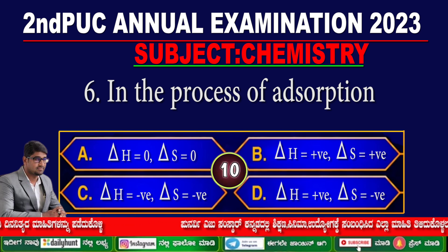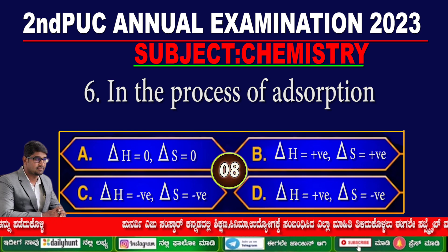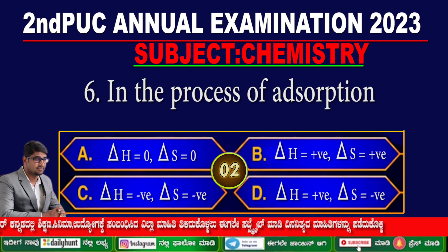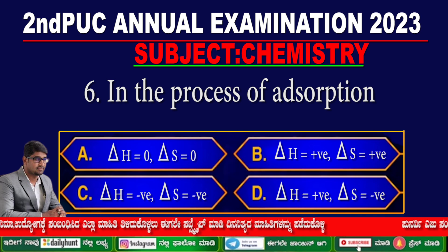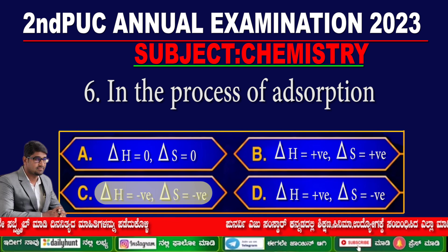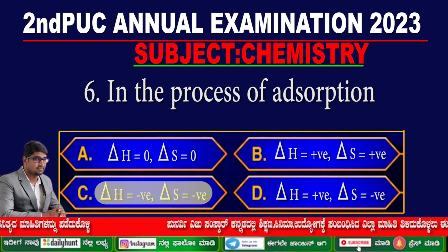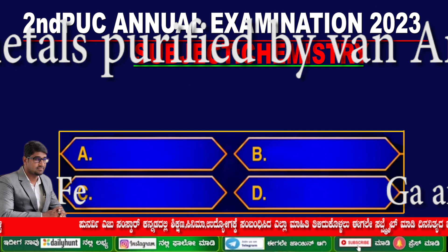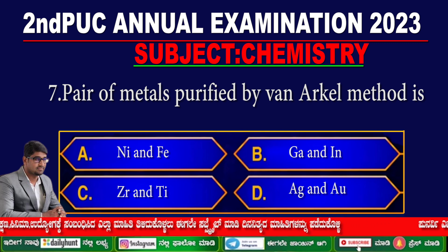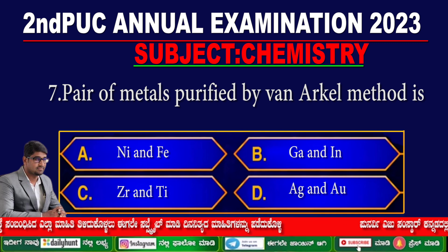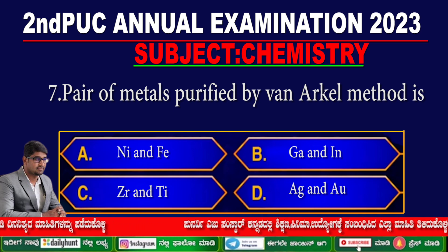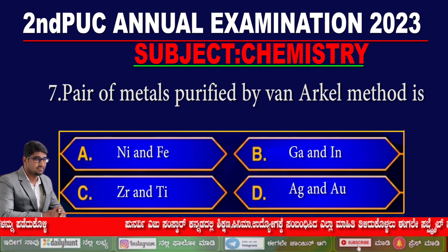Your time starts now. The correct answer is option C: ΔH = negative, ΔS = negative. Question 7. Pair of metals purified by the Van Arkel method is — option A: Ni and Fe, option B: Ga and In, option C: Zr and Ti, option D: Ag and Au.